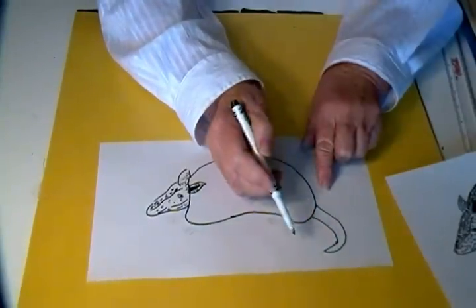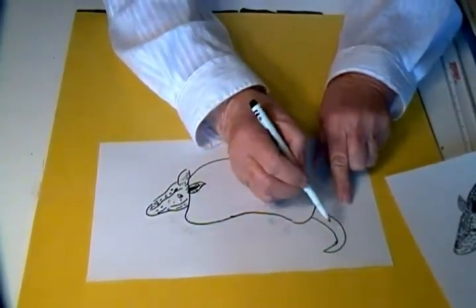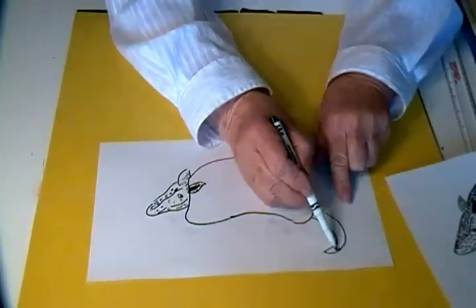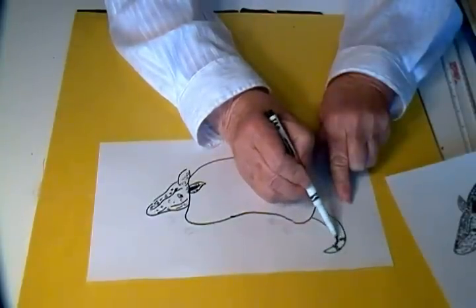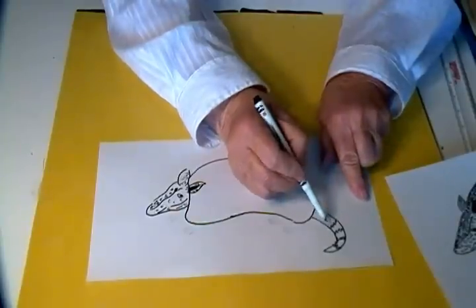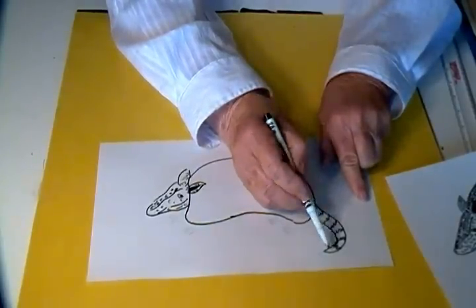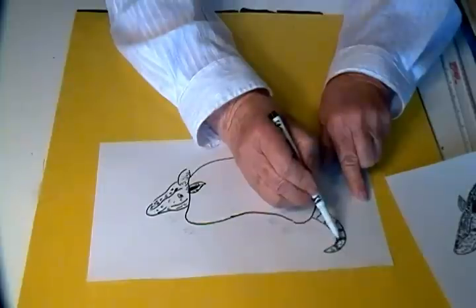It doesn't matter which way you curve it or you can leave it out straight. Then to show texture we're going to draw some zigzag lines across the tail. Then just put in some straight lines.